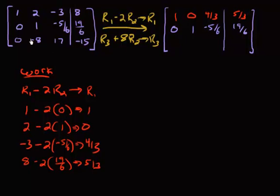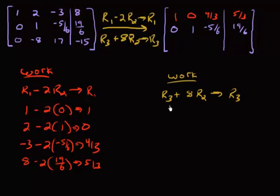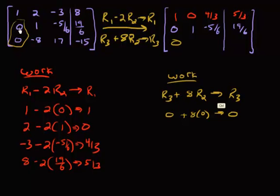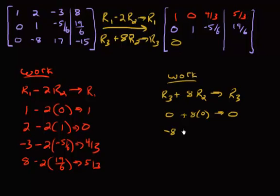Now let's go on to the 3rd row. So that was row 3 plus 8 times row 2, and we're going to store that back into row 3. We have 0 plus 8 times 0, which is 0. Anything that you've changed already won't change back, so these are going to remain 0s for the rest of the remaining row operations. Once you're done with a column, that column is done — it doesn't change. Then we're going to have negative 8 plus 8 times 1, which gives me 0. Again, that was supposed to happen.